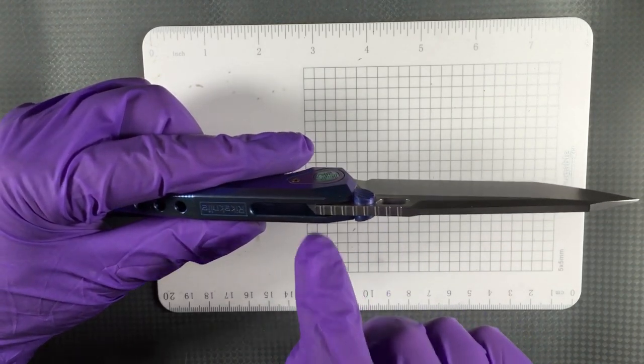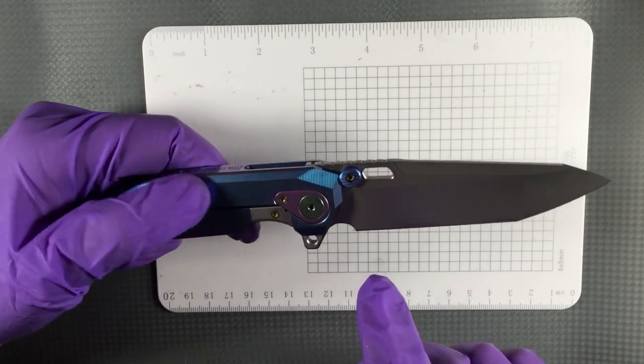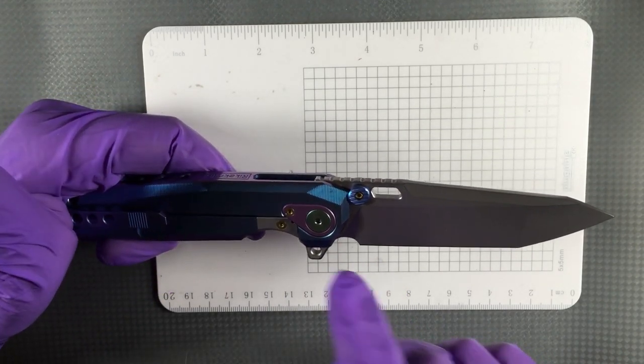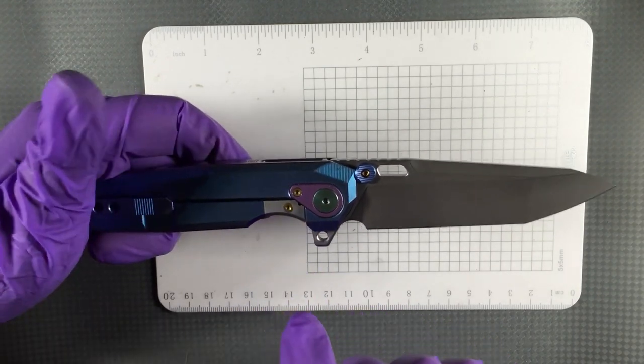This does have jimping that the Thor 1 doesn't have. The lock bar is very similar. The insert is similar. They've chosen to make this very visible and not try and hide it.